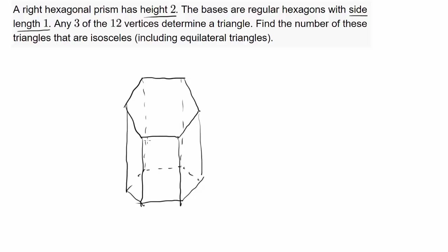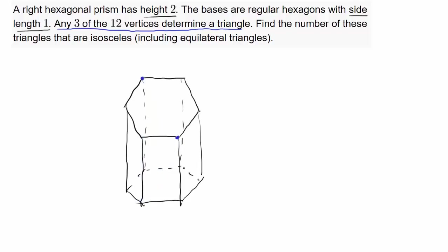We have this hexagonal prism and we know any 3 of the 12 vertices determine a triangle. We can pick 3 vertices, connect them, and we should have a triangle. There are 6 vertices on top and 6 vertices down below, so there are 12 vertices. We are picking 3 of them. Find the number of these triangles that are isosceles, including equilateral triangles.